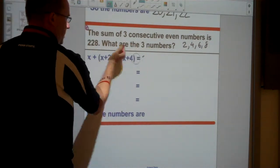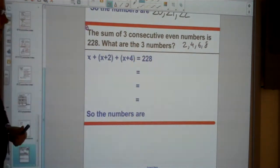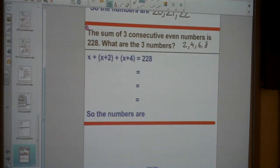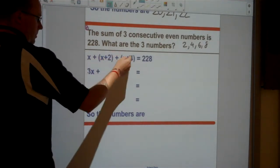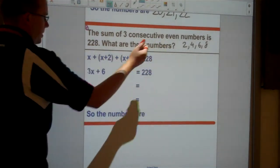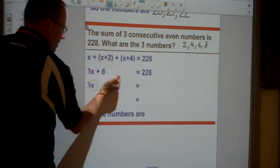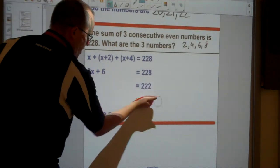Equals 228. If I was to have four consecutive even numbers, then the next one would be x plus 6. Then we can group terms. So I've got 3x. 2 plus 4 is 6. And I should be able to solve this one equally easily as well. Take away 6 from both sides. And then divide by 3.